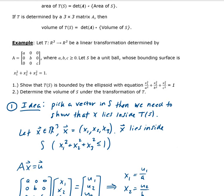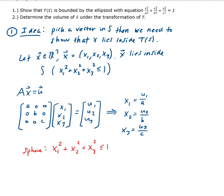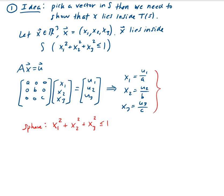Every point inside the sphere is strictly less than 1, but we include the surface as well. Plugging the values in, we get u1²/a² + u2²/b² + u3²/c² ≤ 1. Therefore, we showed that under this transformation, u lies inside T(S) — u belongs to the transformation of S.